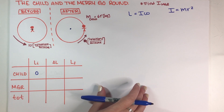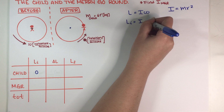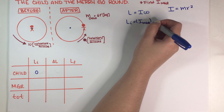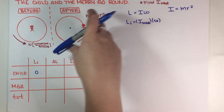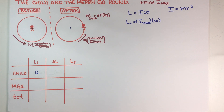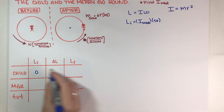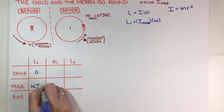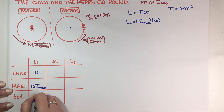For the merry-go-round, L-initial is equal to I_merry-go-round times the angular velocity of the merry-go-round, which is 10 rotations per minute. This is not in SI units since we have rotations per minute instead of radians per second, but I'm almost positive this won't matter, so I'll leave it like this. This gives us 10·I_merry-go-round.